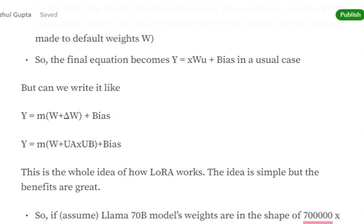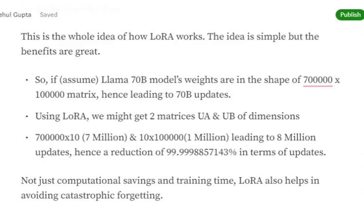How is this useful? What computation will it save? It saves a lot. Assume that Llama 70B model has a weight matrix of shape 700,000×1,000,000, hence leading up to 70 billion updates. Using LoRA, we might get two matrices UA and UB of dimensions 700,000×10 and 10×1,000,000, leading to 8 million updates.